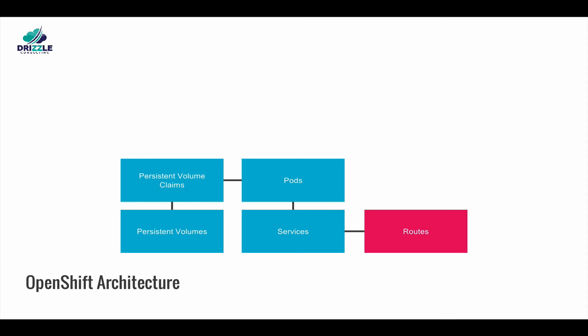The management of pods is maintained by a replication controller, which ensures that a specified number of replicas of a pod are running at all times. If pods exit or are deleted, the replication controller acts to instantiate more up to the desired number. Likewise, if there are more running than desired, it deletes as many as necessary to match the number.